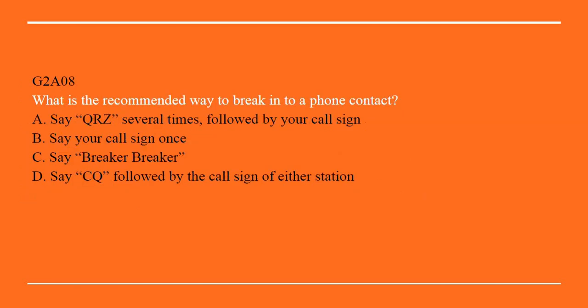G2A08: What is the recommended way to break into a phone contact? A. Say QRZ several times followed by your call sign. B. Say your call sign once. C. Say breaker breaker. D. Say CQ followed by the call sign of either station. The best way is B: Say your call sign once.